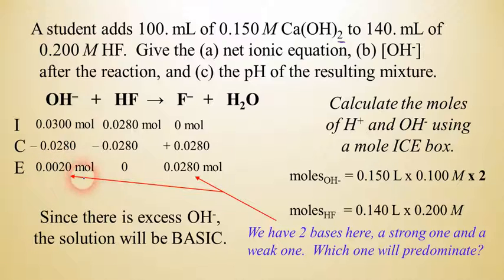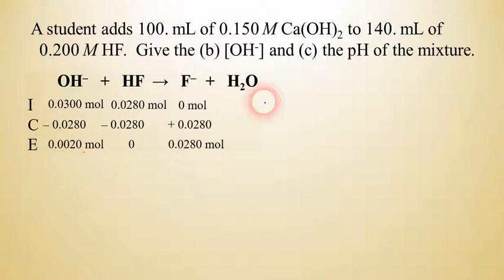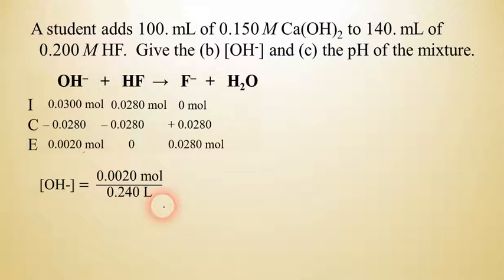What we have to do now is find the molarity of that hydroxide. So we have 0.0020 moles of hydroxide. And to find the molarity of that, we have to divide it by the total volume. And so we had 100 mils up here plus 140 mils there. So that's 240 milliliters total. So we're going to have to divide that 0.002 moles by 0.240 liters. And when we do that, we get an answer of about 0.0083 molar hydroxide.